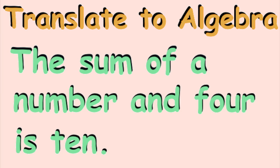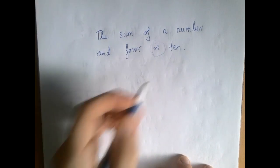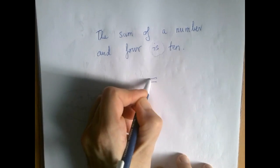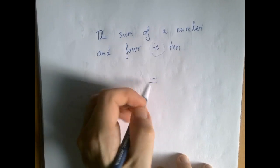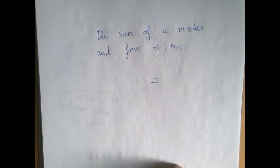We're given an English statement, and using x instead of the number, we should translate this statement into an equation. 'Is' equates two things — it's sort of the English version of the equal sign.